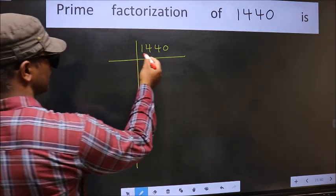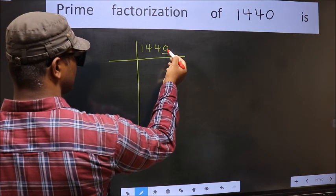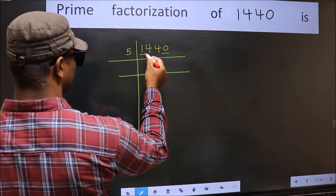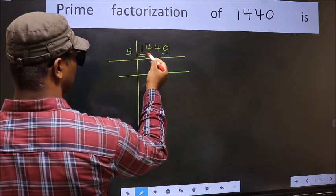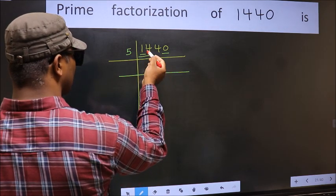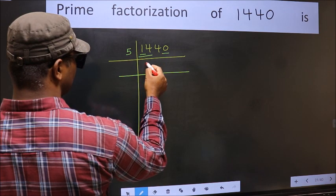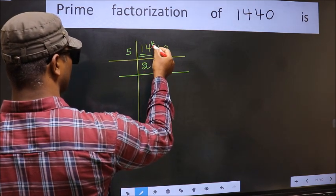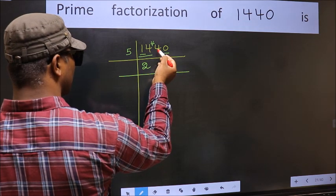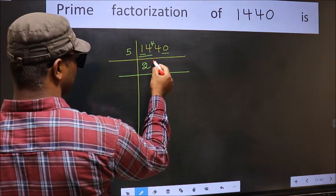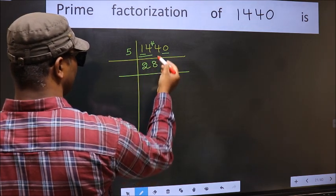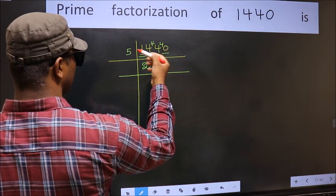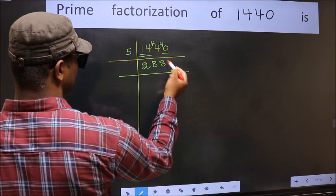In this number the last digit is 0, so take 5. The first number 1 is smaller than 5, so take two numbers: 14. A number close to 14 in the 5 table is 5×2=10. 14 minus 10 is 4, carry forward to get 44. A number close to 44 in the 5 table is 5×8=40. 44 minus 40 is 4, carry forward to get 40. When do we get 40 in the 5 table? 5×8=40.